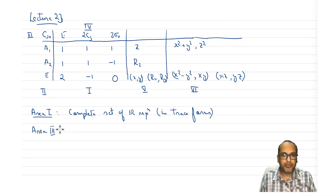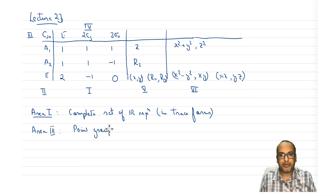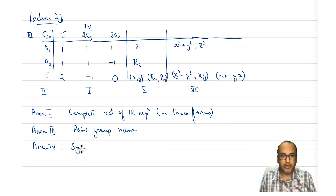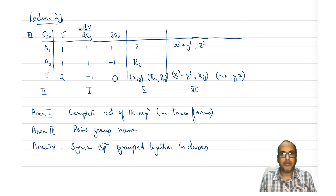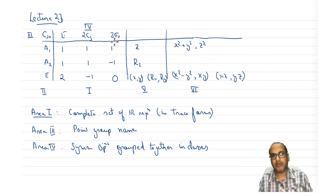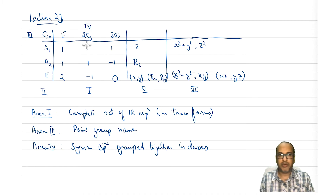Area 3 we know — area 3 is the point group name. Area 4 we also know — area 4 is the symmetry operations or group elements grouped together in classes. For example, here 2C3 is one class — C3 and C3 squared are combined into one class. Sigma V1, sigma V2, sigma V3 are combined into another class.